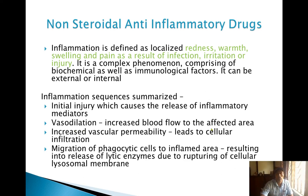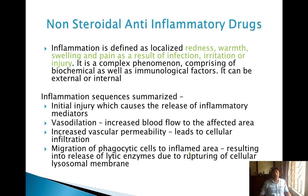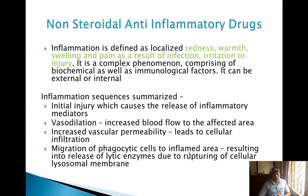The sequence is: vasodilation increases blood flow to the affected area; then increased vascular permeability leads to cellular infiltration; then migration of phagocytic cells to the inflamed area, resulting in release of lytic enzymes due to rupturing of the cellular lysosomal membrane. These mechanisms happen when an external organism — or object like a nail piercing the skin — enters, and bacteria enter with it. The body fights those bacteria, causing inflammation.